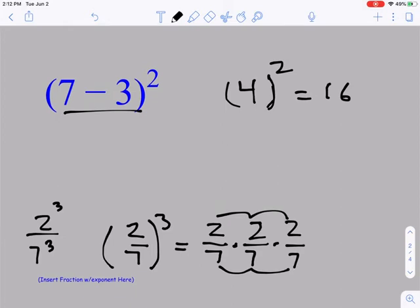So two to the third power is two times itself three times, which is eight. Seven to the third power is 49 times seven, which I think is like 300 something.